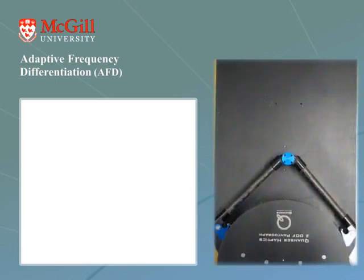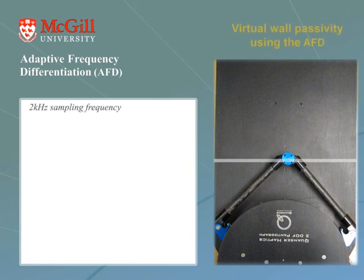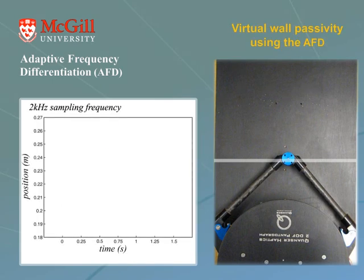To illustrate this experimentally, we employed a 2-degree-of-freedom pantograph from Quanser. We consider the example of a falling ball hitting the ground. The endpoint of the robot was assumed to be a virtual ball, and a Kelvin-Voigt wall was modeled to represent a virtual ground. Employing the AFD to estimate the velocity resulted in a passive virtual wall.